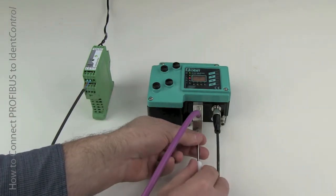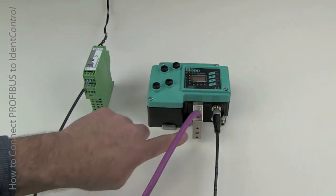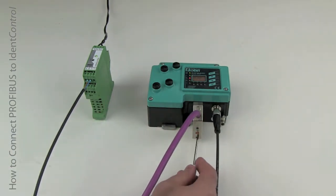If this is the last node of the network, you can see, like here, there's only one Profibus in connection, and I'm going to flip the termination switch to the on position.